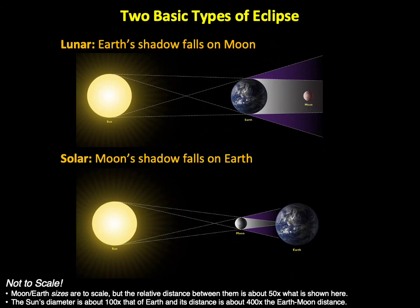Returning to our two basic eclipse types, let's close by discussing why you have many more chances to see a total lunar eclipse than a total solar eclipse. Both types actually occur about equally often, but the fact that Earth's shadow covers the entire Moon means that anyone on Earth's night side can watch any total lunar eclipse. In other words, about half the planet can see a lunar eclipse at the same time.